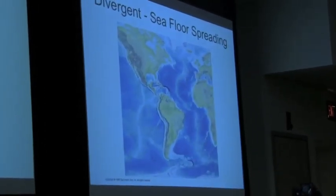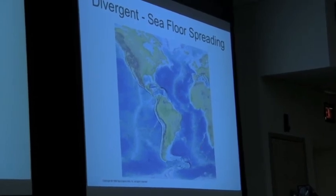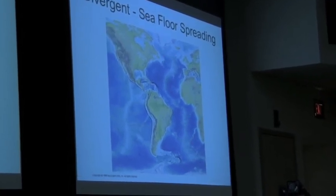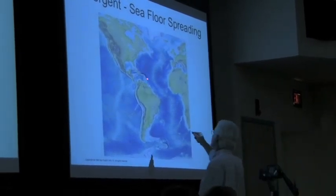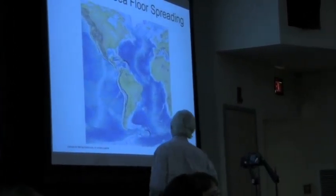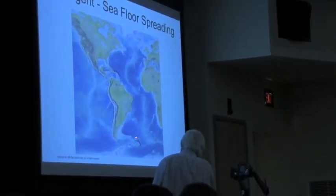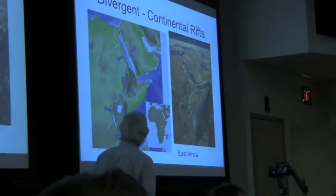Let's look at divergent first. Seafloor spreading, making our oceans. Here is the Atlantic Ocean. It's spreading. The only subduction zones are here in the Caribbean and the South Sandwich Islands near the Scotia Sea in the southernmost Atlantic.